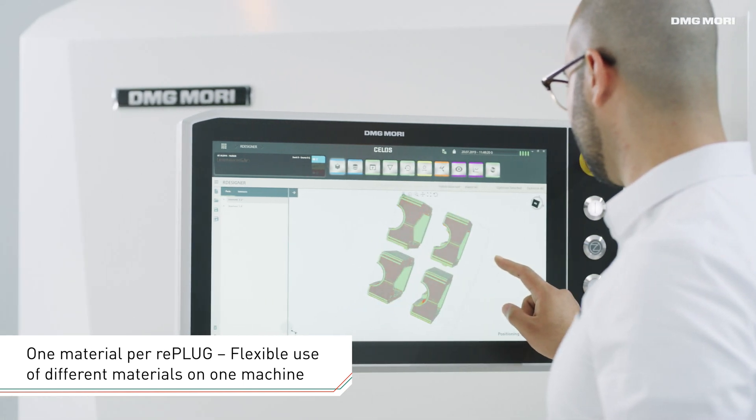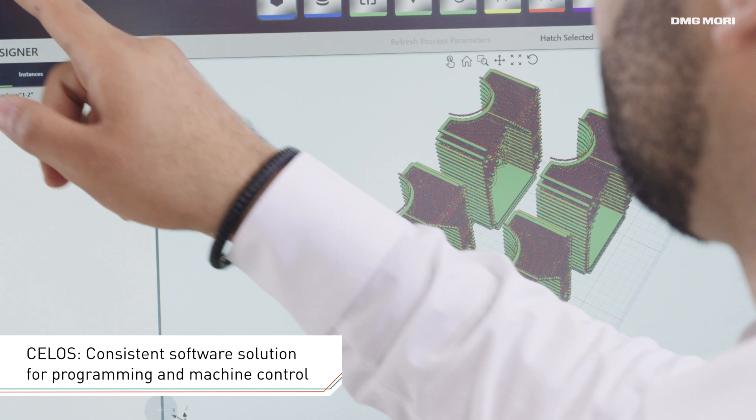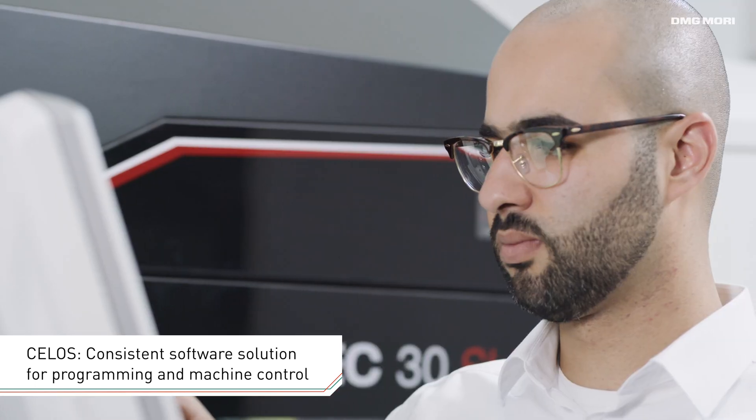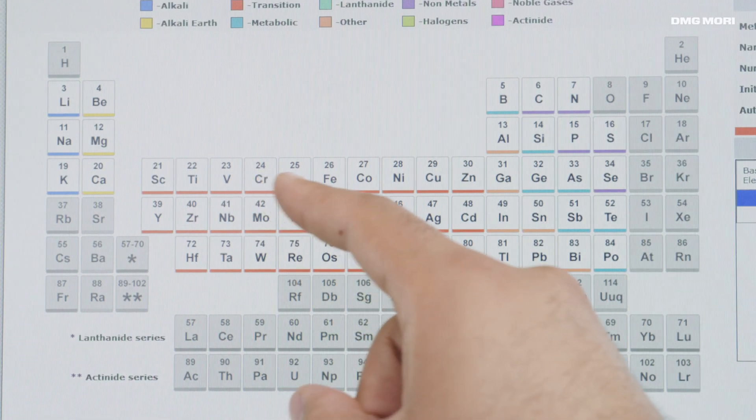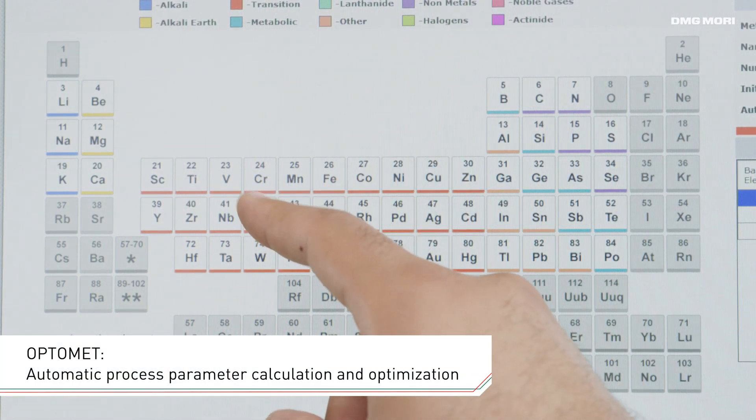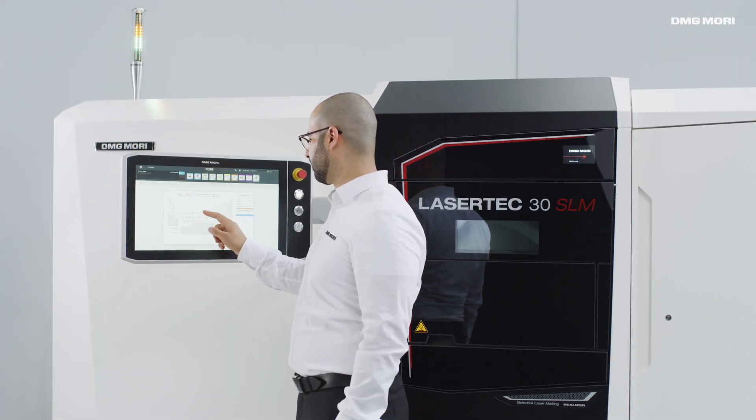The app-based user interface CELOS offers a consistent software solution covering everything from CAM programming and process parameter calculation through to machine control tasks. The automatic calculation of process parameters with OptiMet makes it possible to create own parameter sets within minutes.